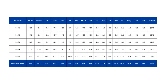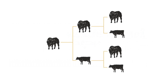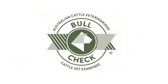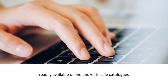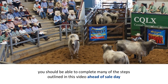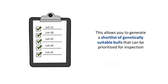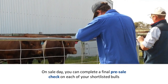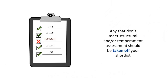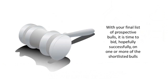With breed plan EBVs and selection indexes, pedigree information, DNA test results and bull check information readily available online and/or in sale catalogues, you should be able to complete many of the steps outlined in this video ahead of sale day. This allows you to generate a shortlist of genetically suitable bulls that can be prioritised for inspection. On sale day, you can complete a final pre-sale check on each shortlisted bull. Any that don't meet structural and/or temperament assessment should be taken off your shortlist, leaving your final list of prospective bulls ready to bid on.